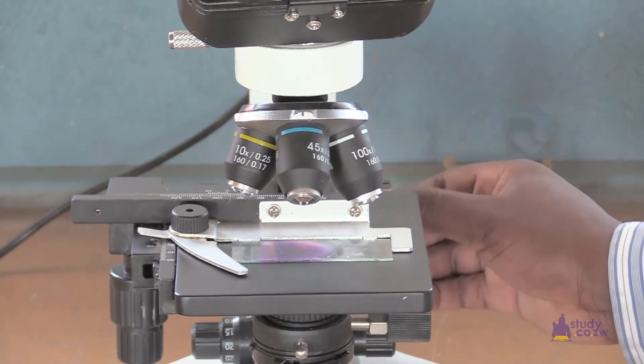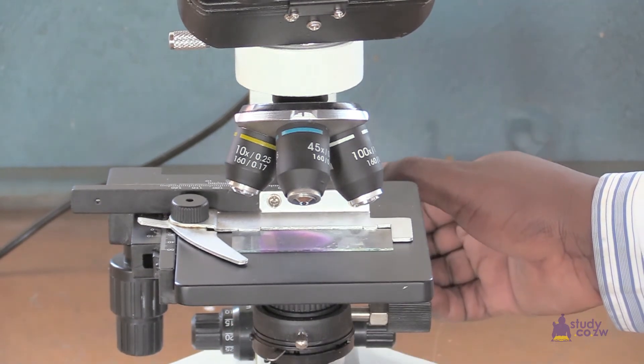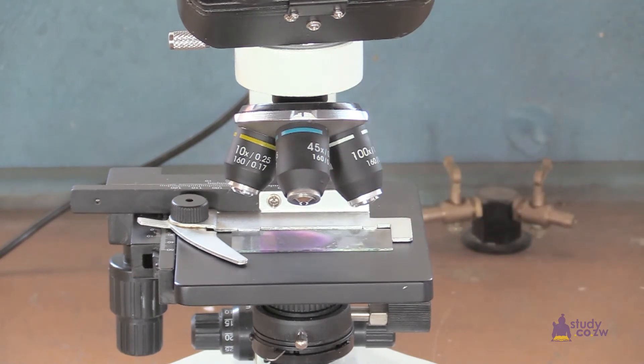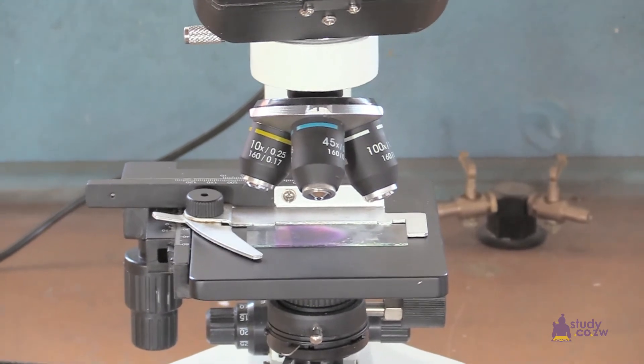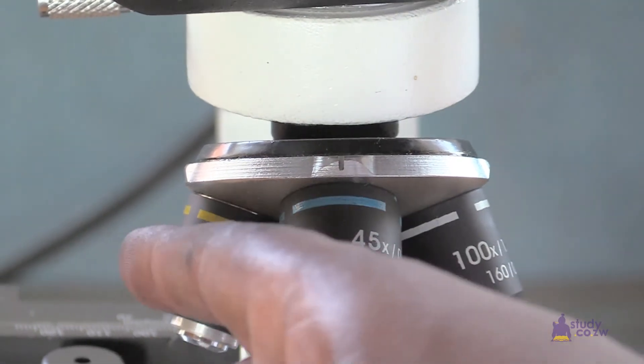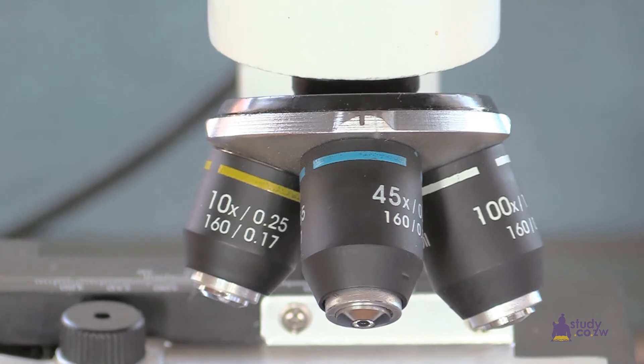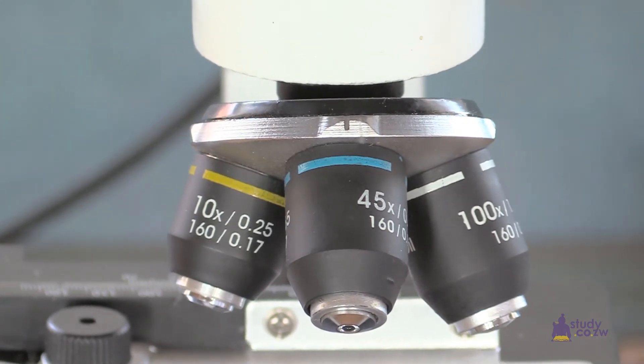These are the magnifying lenses. They are of various magnifications: this is the 100 times, the 45 times, 10 times. So the greater the magnification, the more finer the cell under observation.